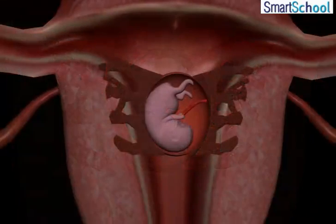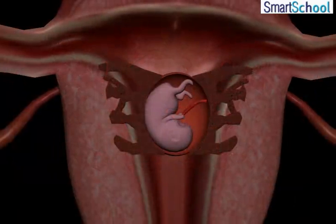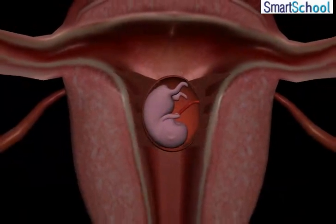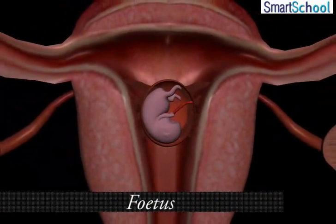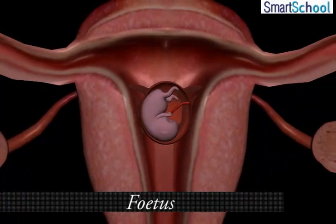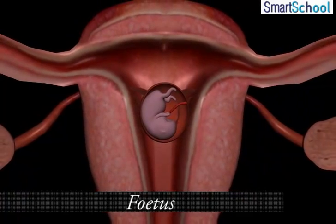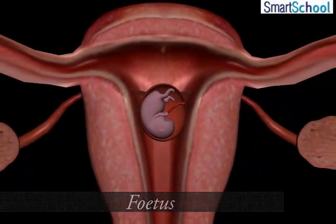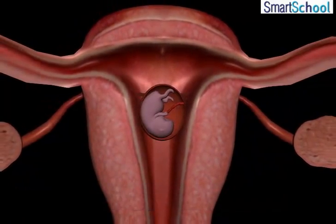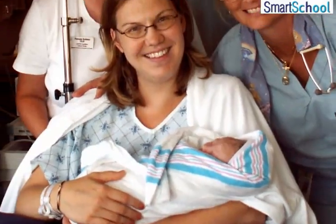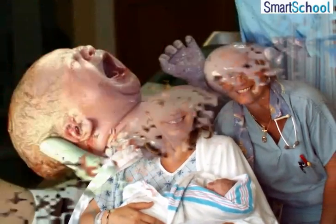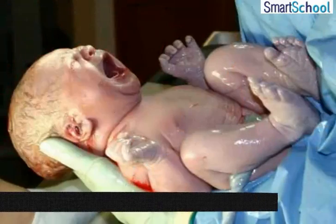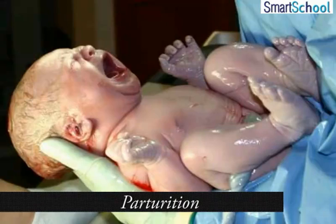The stage of the embryo in which all the body parts can be identified distinctly is called a fetus. When the development of the fetus is complete, the mother gives birth to the baby. Birth of a fully developed fetus is called parturition.